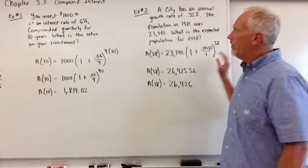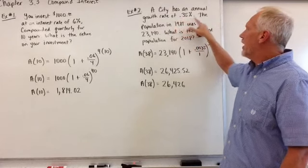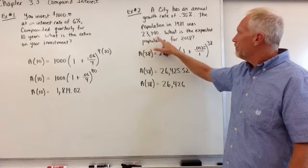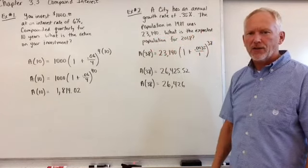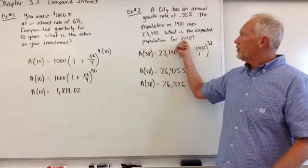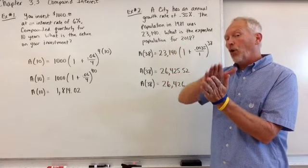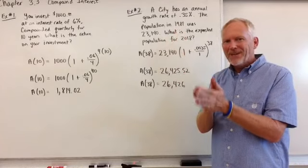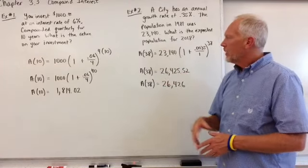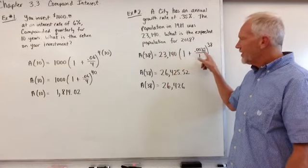Example number two, we have a city has an annual growth rate of point three five percent. The population in 1981 was twenty three thousand one hundred and forty. What is the expected population for 2018? So we've got a of 38 because if you take 2018 and 1981, you get 38 years because remember, you're looking at the whole year of 1981. So in the beginning, when the census took place, we have to count that year. So you actually end up with 38 years.